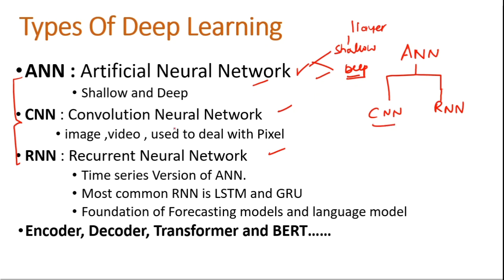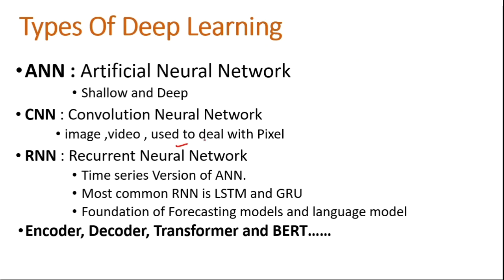CNN — convolutional neural network — is used for image and video processing and is specially designed for computer vision. It was invented to process pixel data, since images and videos are divided into pixels. RNN — recurrent neural network — is basically a time-series version of ANN. Whenever there is time involved in the data, we call it time-series data, and we use RNN for that.